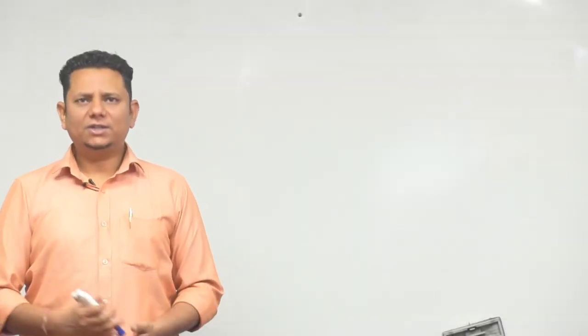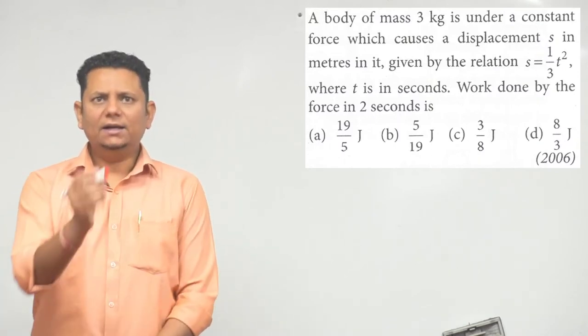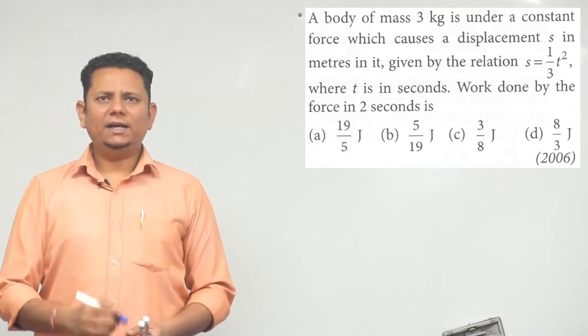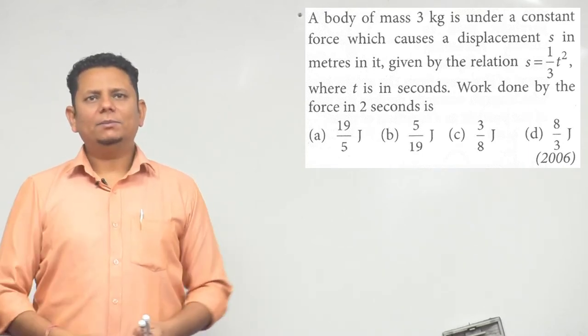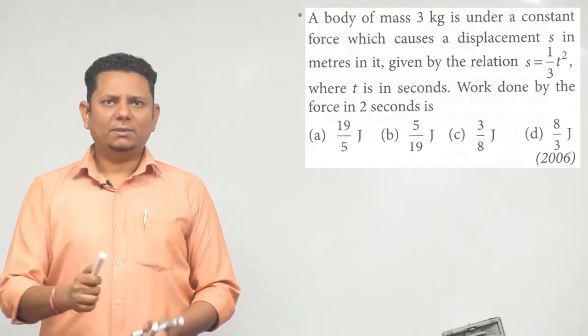Next question. A body of mass 3 kg is under a constant force which causes a displacement S. The relation between S and T is given as S = (1/3)T², where t is in seconds.